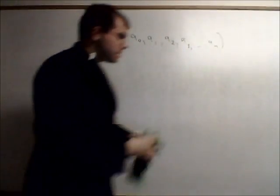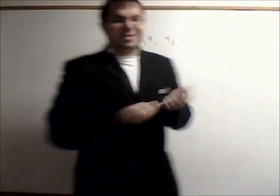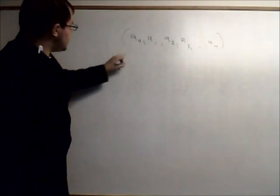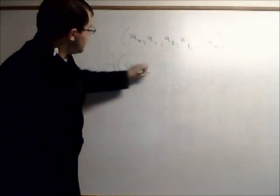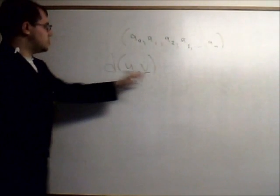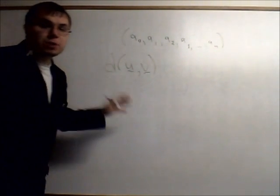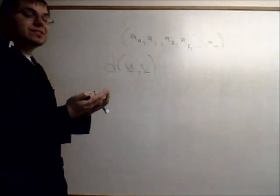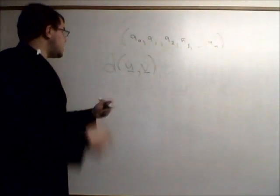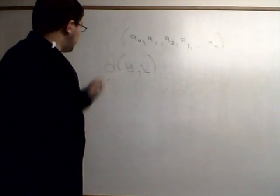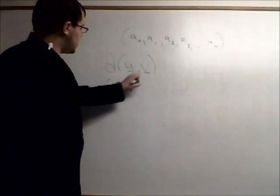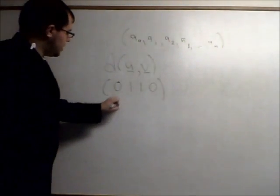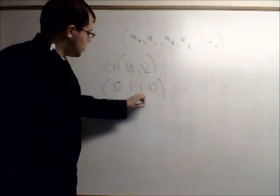Now we're going to talk about hamming distance, or just call it distance. Hamming distance we're going to denote as D(U, V), where these are two vectors. What we do with the hamming distance is we check for the number of positions where they don't agree. Say we had two vectors here: 0, 1, 1, 0, and 1, 1, 0, 1.